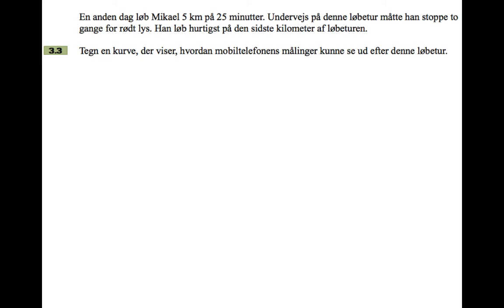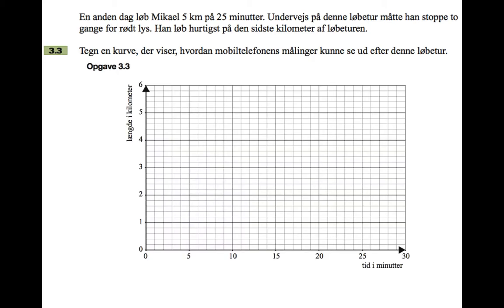Next part. On another day Mikel runs five kilometers in 25 minutes. On the way he had to stop two times for a red light and he ran fastest on the last kilometer of the run. Draw a curve that shows how the mobile telephone's measurements could have looked after this running trip. So there's lots of ways you could have answered this, but here's an example.